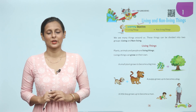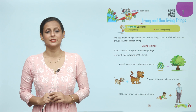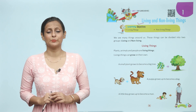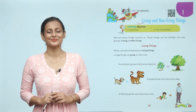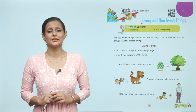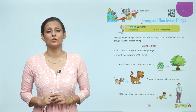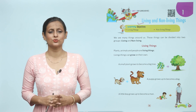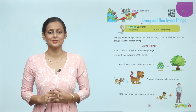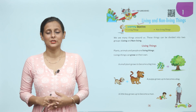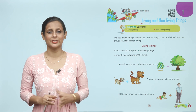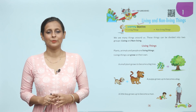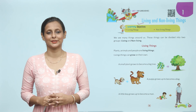Living things: plants, animals, and people are living things. Living things can grow on their own. Children, plants, animals, and people are living things — we can grow on our own.